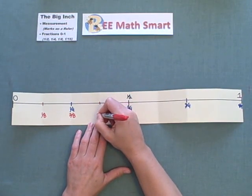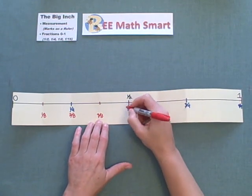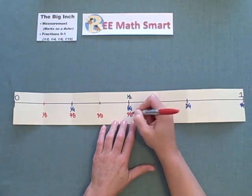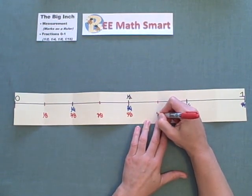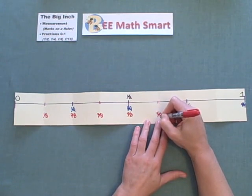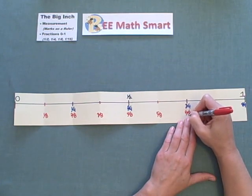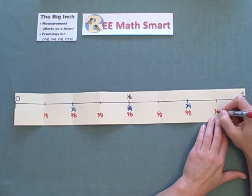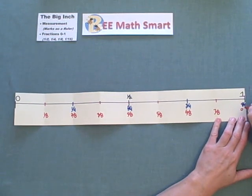And we know this is going to be four eighths because four is half of eight. Therefore, four eighths equals one half. This is five eighths. This is six eighths. This is seven eighths. And last but not least, we have eight eighths. Eight eighths equals a whole, just like four fourths equal a whole.